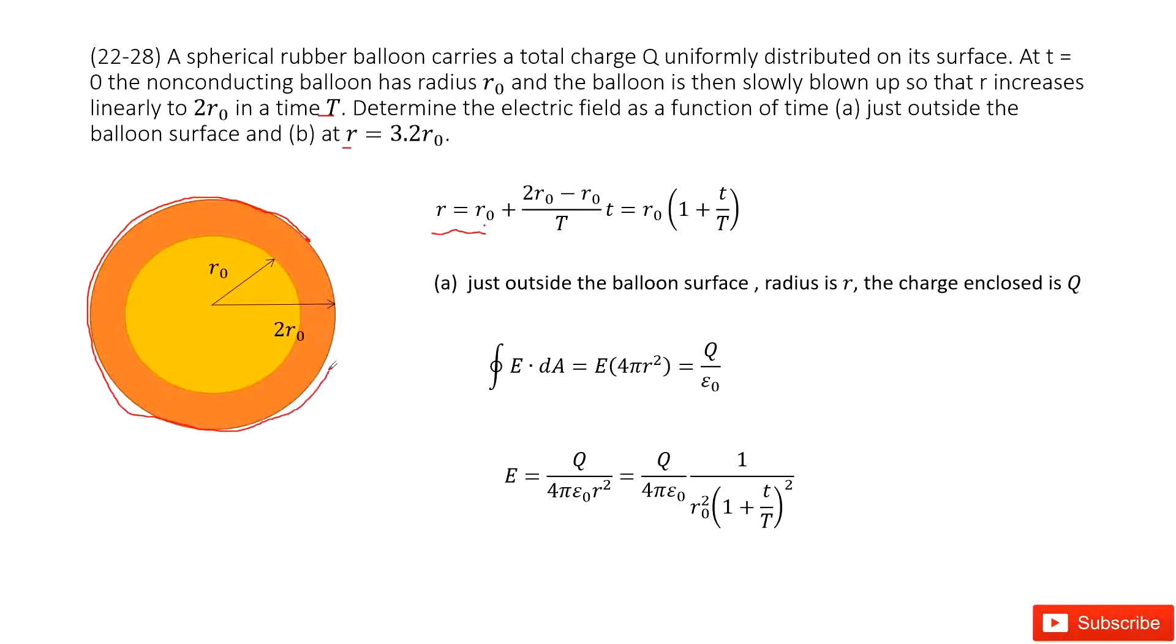Just at this boundary. Now we can see the enclosed charge inside this Gaussian surface is the total charge Q, uniformly distributed on its surface. There it just expands, so the charge is Q.